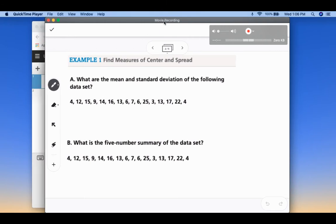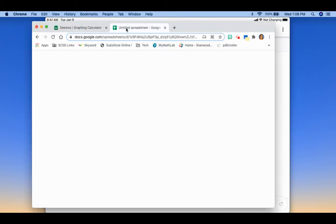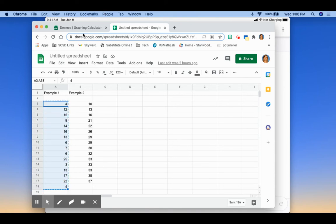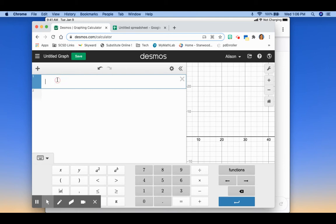So what I did, so that this video wasn't five hours long, is I took these numbers already and put them into a spreadsheet real quick. So I'm going to copy these numbers, and then I'm going to go to Desmos, and I'm going to paste those numbers into Desmos. And you'll see it says it's a 16-element list.